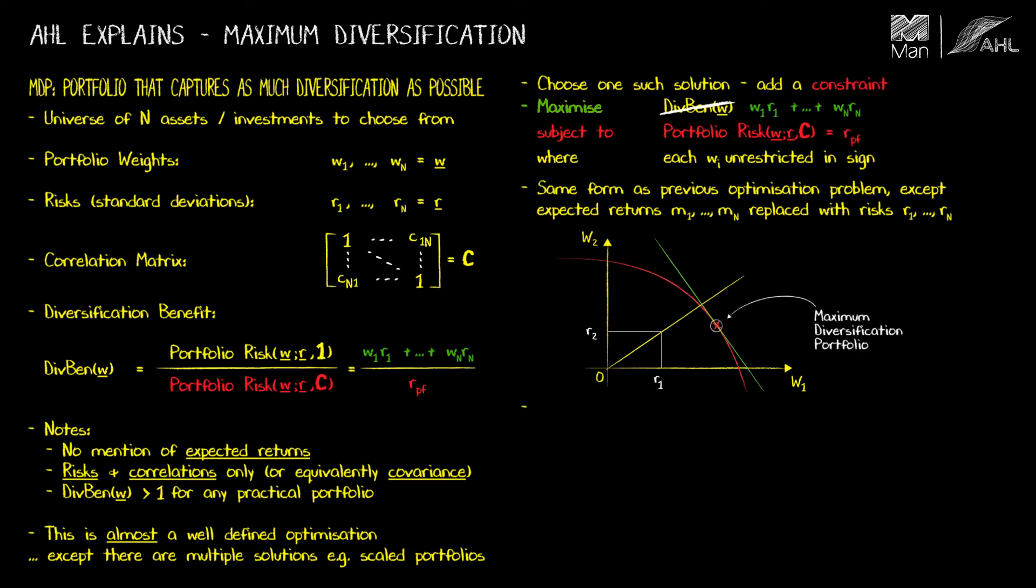The maximum diversification portfolio arises when each asset's expected return is proportional to the risk. In other words, when each asset has the same Sharpe ratio.